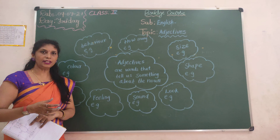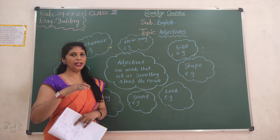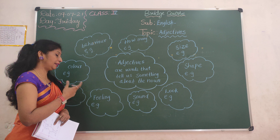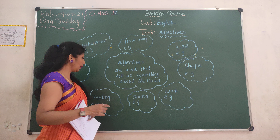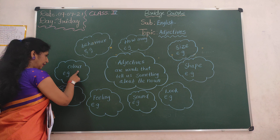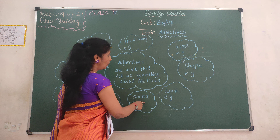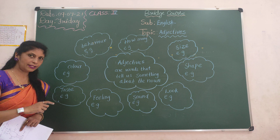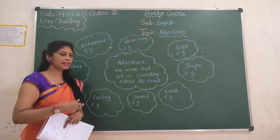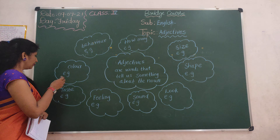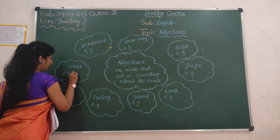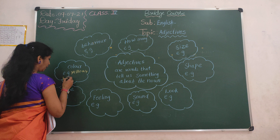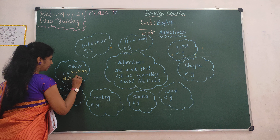Adjectives are words that tell us something about the noun. For example, color: yellow, blue, dark, light.